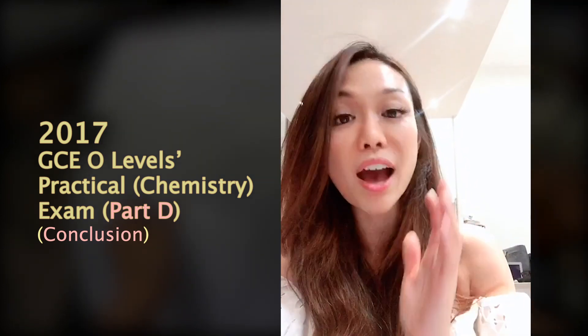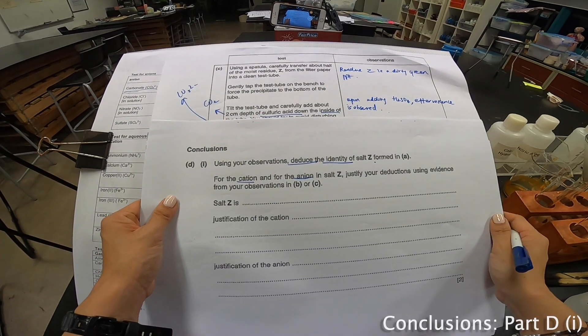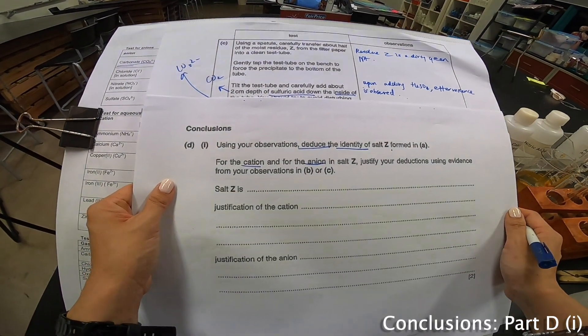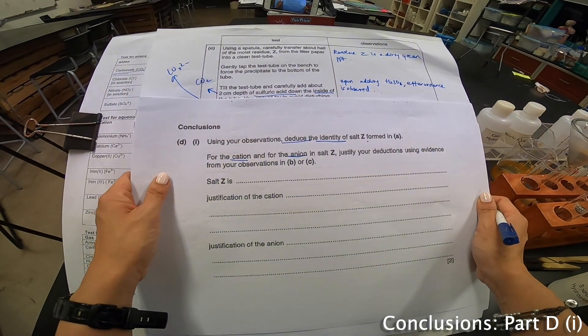Hi! Now we are going to one of the most important portions of the entire paper, which is the conclusion part. So I'm going to teach you exactly the right method and format to answer. Stay tuned, watch and pick up the skills. We have come to the last portion, which is to deduce the identity of salt Z formed in A.